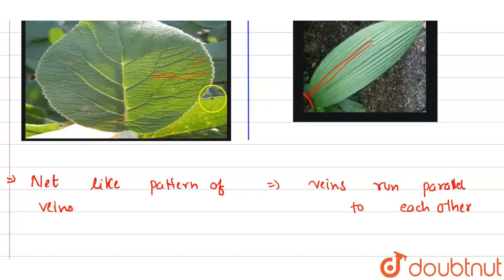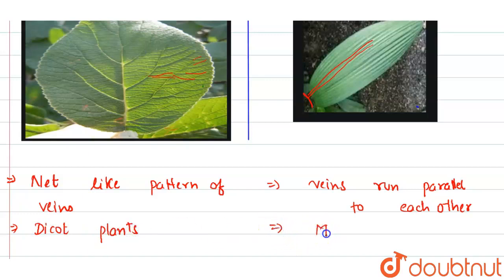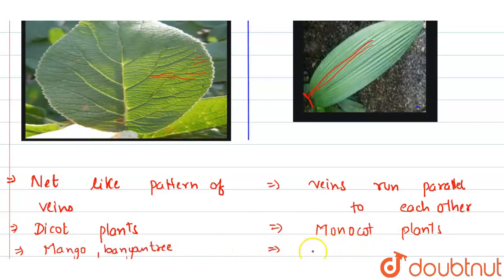These are the main differences in appearance. Second, reticulate venation is present in dicot plants whereas parallel venation is present in monocot plants. Examples of plants having reticulate venation are mango and banyan, and plants having parallel venation are maize and grasses — all grasses have parallel venation.